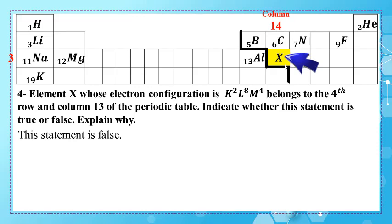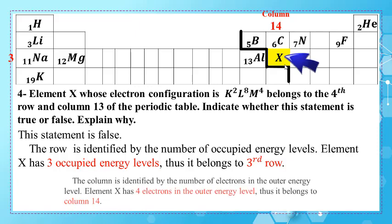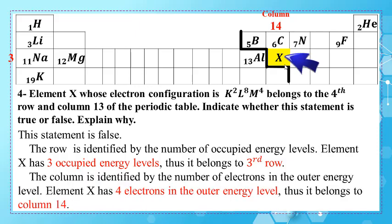This statement is false. The row is identified by the number of occupied energy levels — element X has three occupied energy levels, so it belongs to the third row, not the fourth. The column is identified by the number of electrons in the outer energy level — element X has four electrons in the outer energy level, so it belongs to column 14, not column 13.